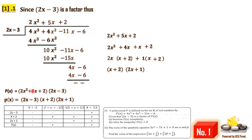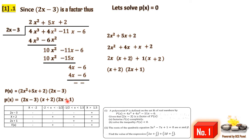The next part asks us to solve the inequality p(x) less than zero. We have a product of three linear factors. The boundary solutions are: from 2x minus 3 equals 0, x equals 1.5 (or 3/2); from x plus 2 equals 0, x equals negative 2; from 2x plus 1 equals 0, x equals negative one-half. The intervals to test are: x less than negative 2, between negative 2 and negative one-half, between negative one-half and 1.5, and greater than 1.5.